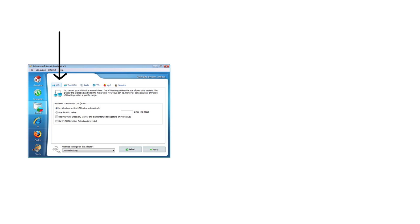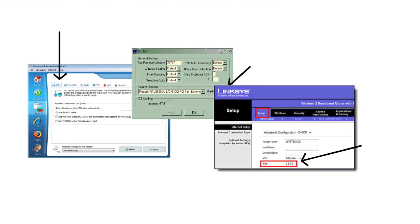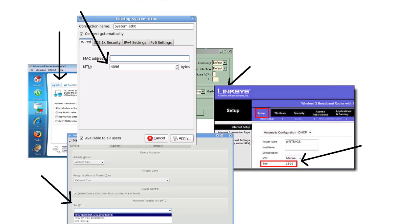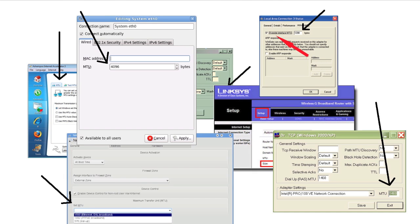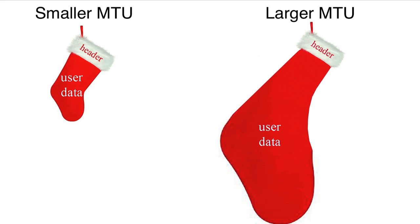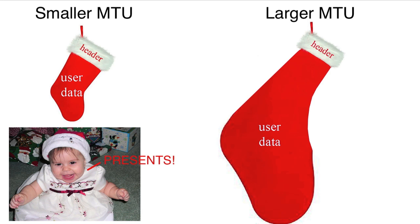MTU is the size in bytes of the largest protocol data unit that a layer can pass onward. This is usually in association with a communications interface like a serial port. In general, a larger MTU means greater efficiency since a packet can carry more user data while the headers remain fixed.